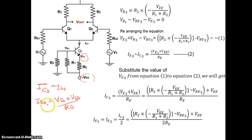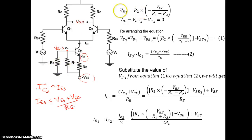To derive IE3, first we write VBE3 — the base-to-emitter voltage of Q3. VBE3 is the voltage across resistance R2, so VBE3 equals VR2. VR2 equals R2 multiplied by the current in the loop, which is VEE divided by R1 plus R2, multiplied by R2. Now we apply KVL inside this loop.